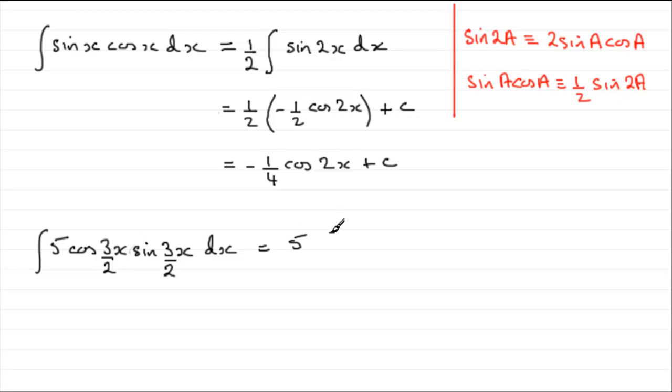So, this becomes five times the integral of a half sine 3x. Now, I'm going to pull the half out the front, so write that as 5 over 2, and then we have this as sine 3x. And we integrate that with respect to x.